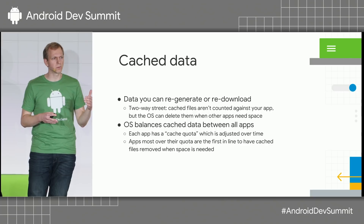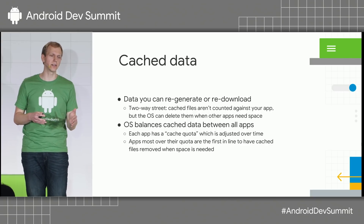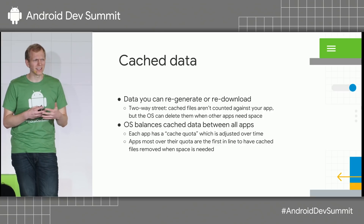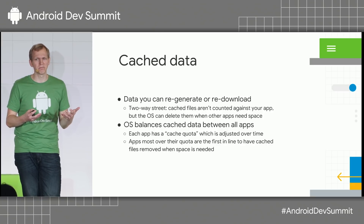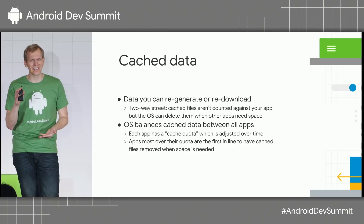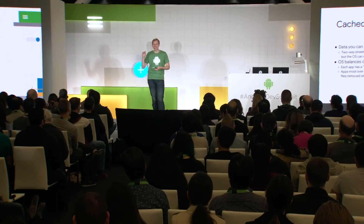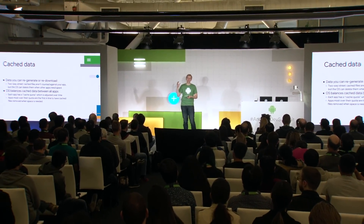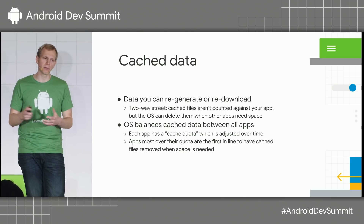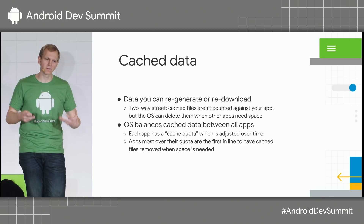We also rewrote the internal implementation of how cached data is cleared. Before O, we'd list all cache files, sort them by modified time, and delete the oldest — a system that could be gamed by setting modified time to something like the year 2038. Now in O and future releases, the OS deletes data from apps that are most over their quota first. If your app stays around the recommended cache quota, you can be confident your data will remain available even as the user fills up their disk.